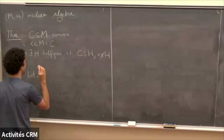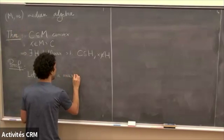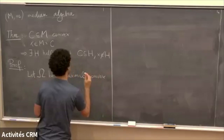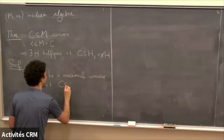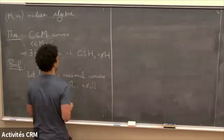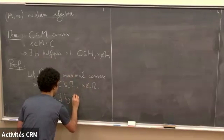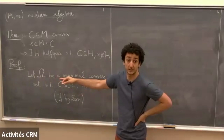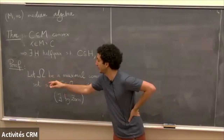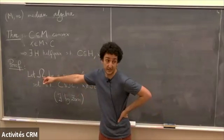Let Ω be a maximal convex set such that C ⊆ Ω but x ∉ Ω. This exists by Zorn's lemma. Now we need to show Ω is a half space. We already know it's non-empty (contains C), its complement is non-empty (contains x), and Ω is convex. The only thing to show is that the complement is also convex.